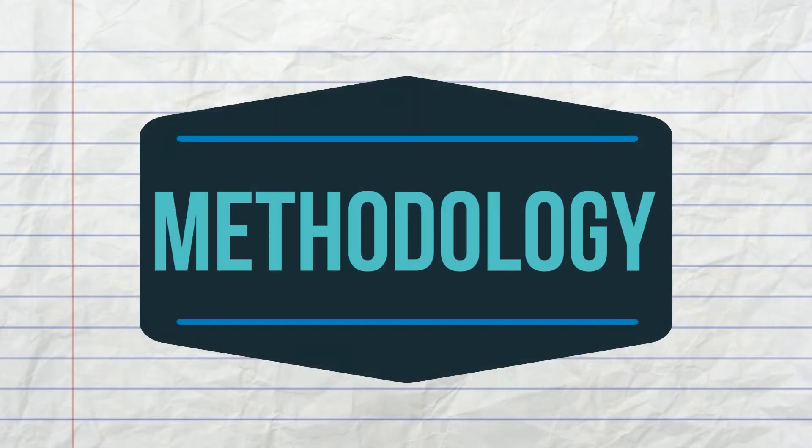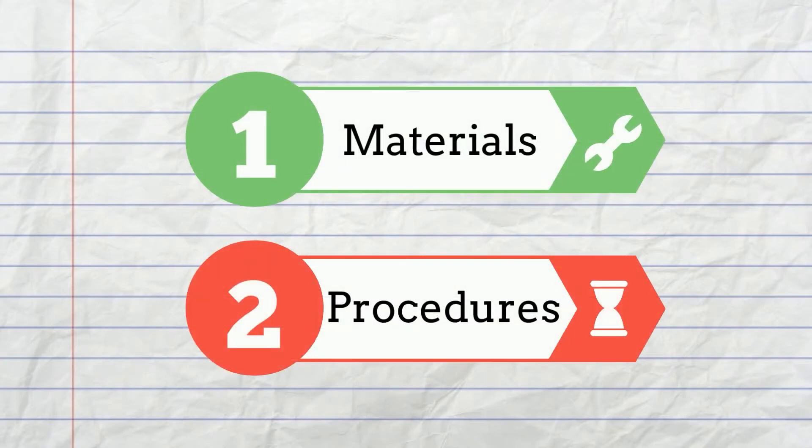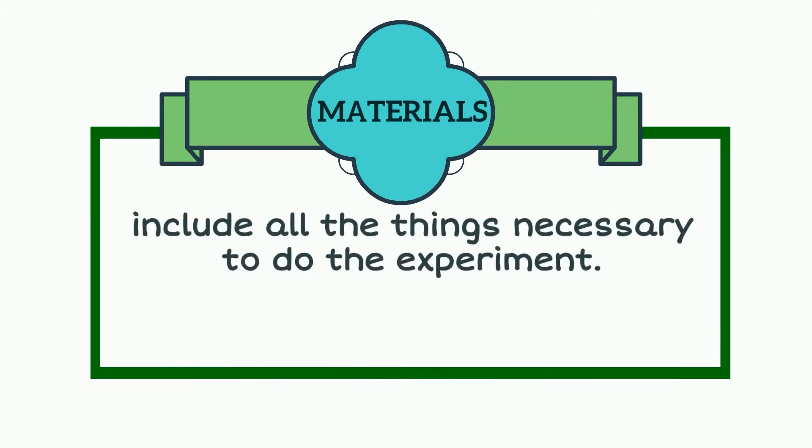Like this example, a good methodology is divided into two parts, materials and procedure. Materials include all the things that are necessary to do the experiment. And yes, not only the materials, but also how much of that chemical or how many of that equipment. It's important to be specific.